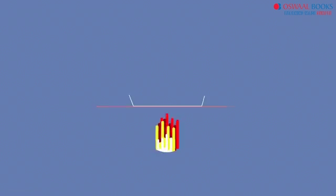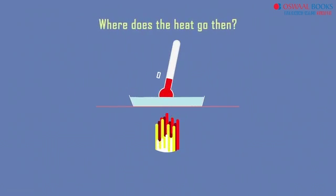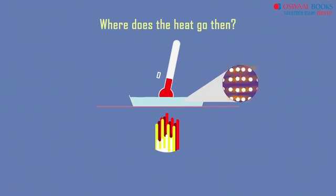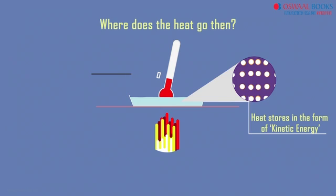In our last video, I left you with an important question: what happens when we supply heat to a solid? The solid melts and gets converted into liquid, but the temperature of the substance doesn't rise. Where does the heat go then? The truth is that the particles of matter absorb the heat and store it inside them. This heat is in the form of kinetic energy. As this heat is hidden and doesn't show its presence on the thermometer, we term it as latent heat.